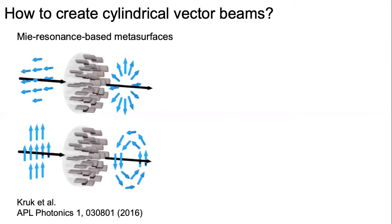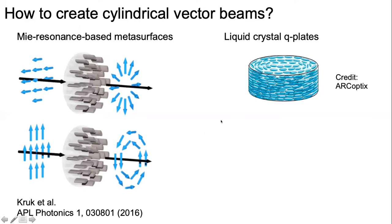These beams can be created in different ways. We used two approaches: the first is to use a silicon metasurface, where each point adds a different phase shift, transforming a Gaussian beam into a radially or azimuthally polarized one. Another approach is to use liquid crystals, which also have a spatial distribution with different orientations at different points.